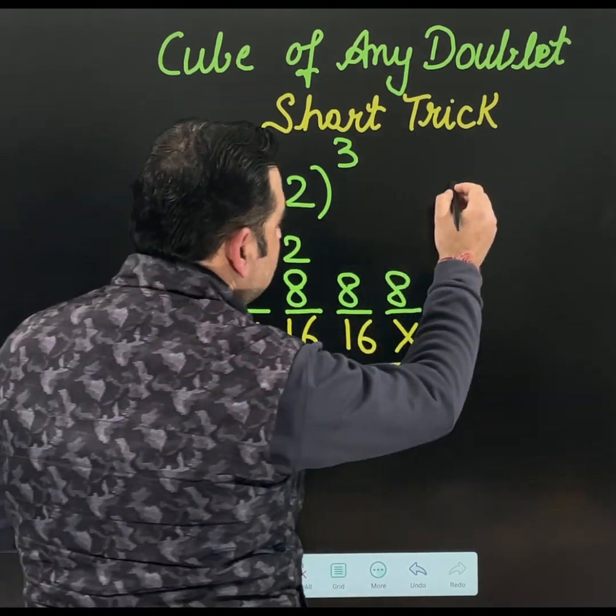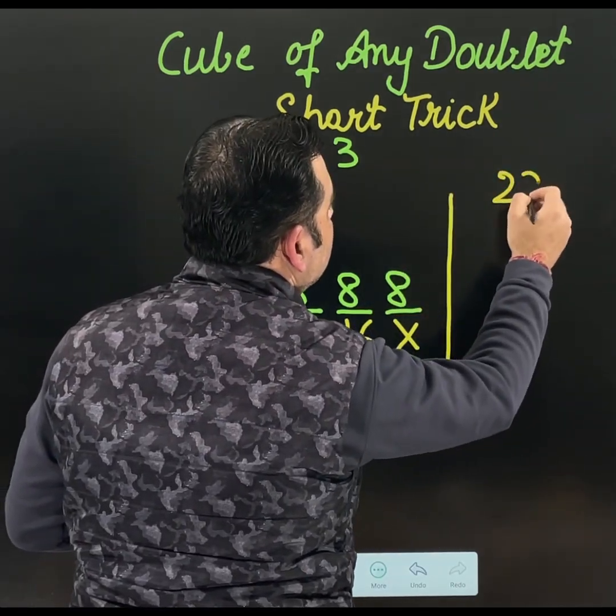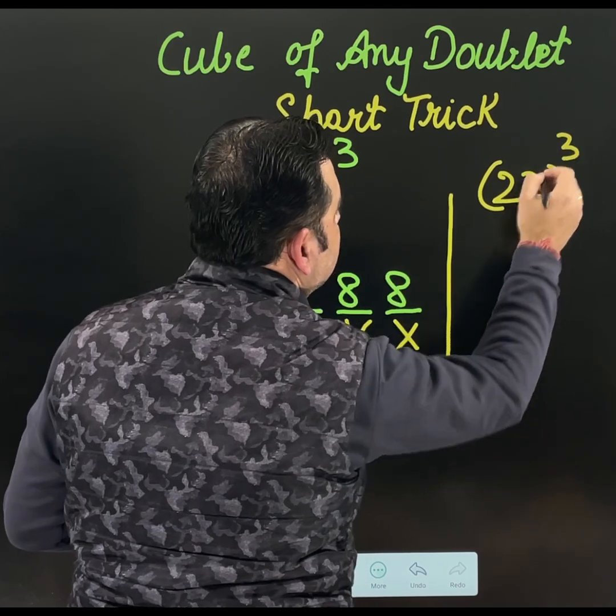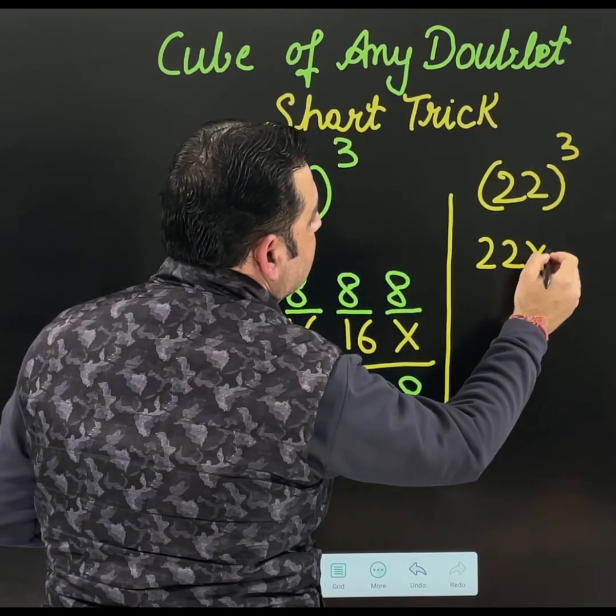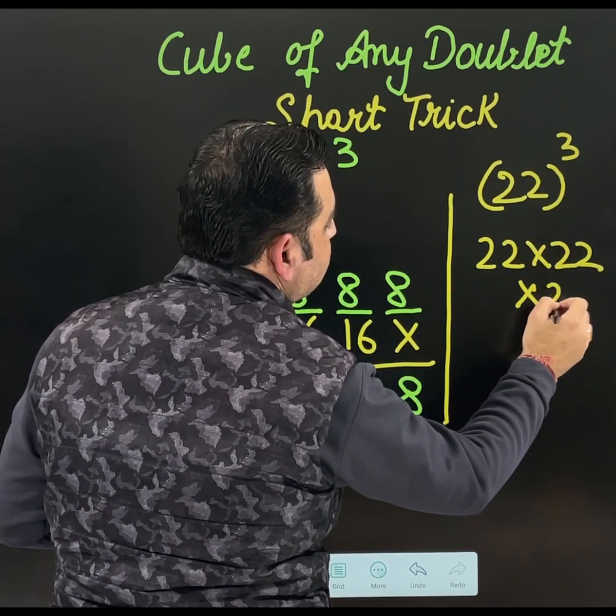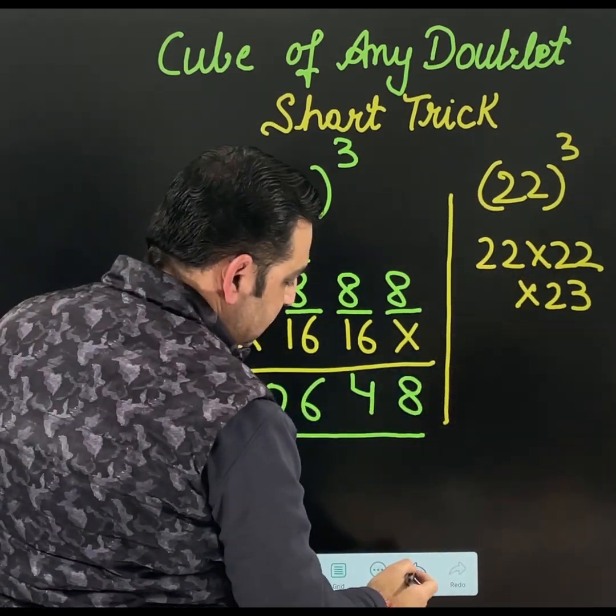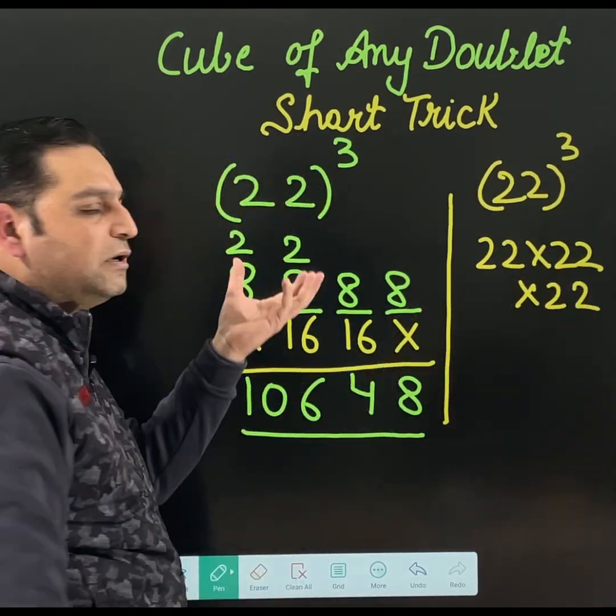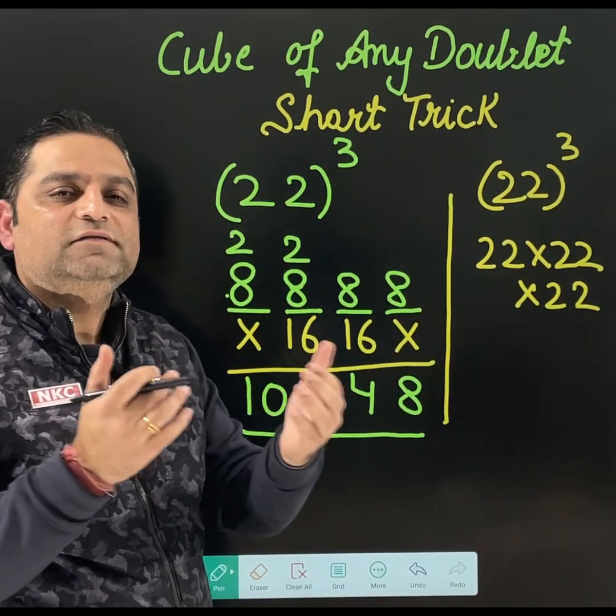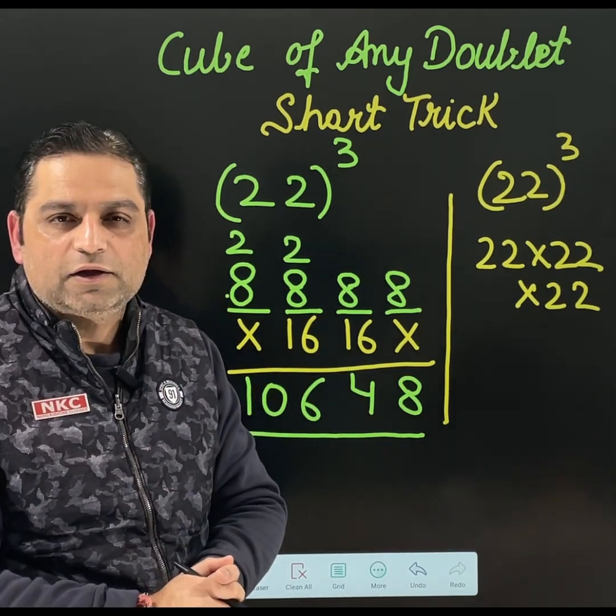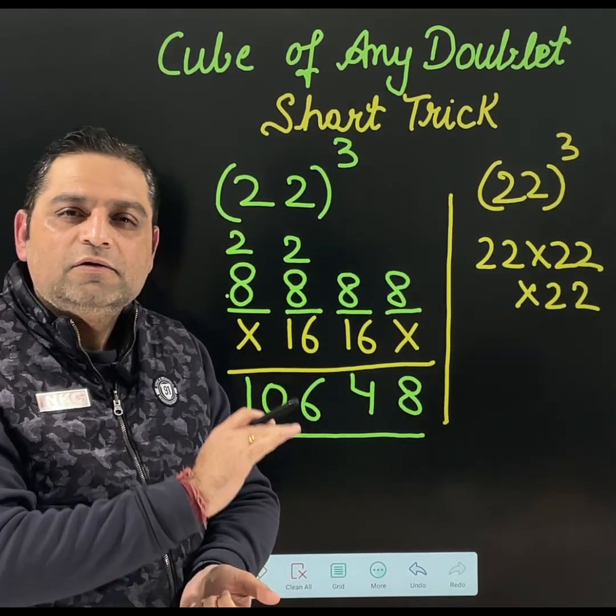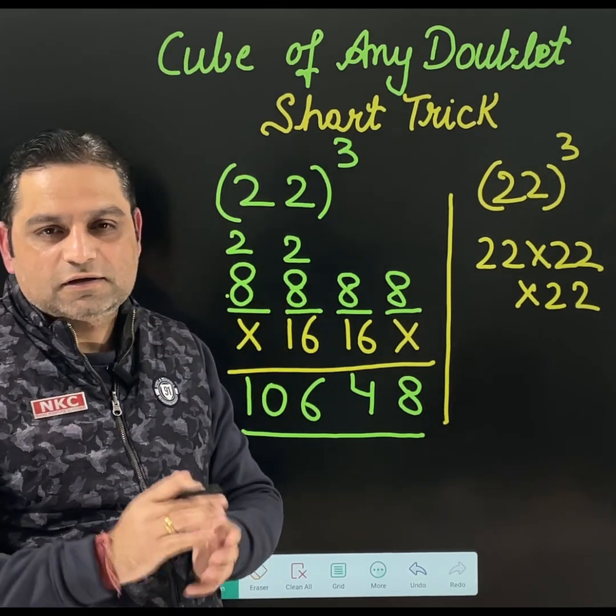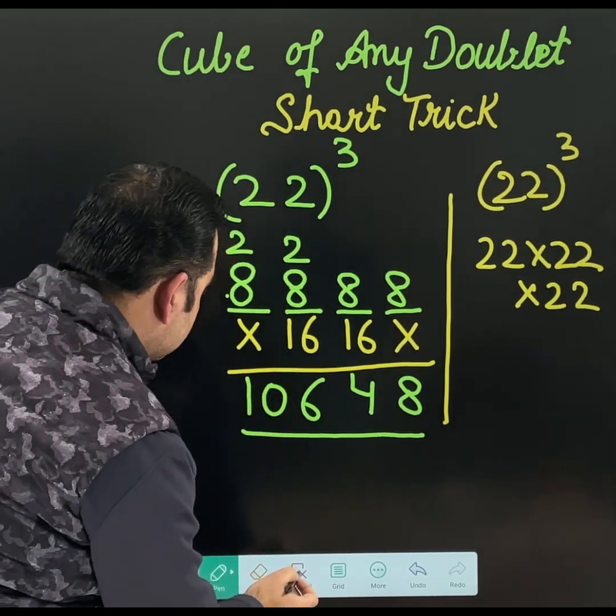Now you should remember, those who are not aware, 22 cube means you are multiplying 22 three times, which is not easy to do. But using this shortcut, quick answer can be found. I hope this method is clear. We are going to do one more example so that concept is clear properly.